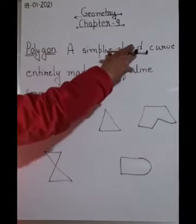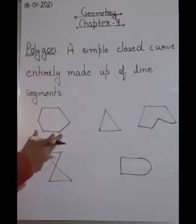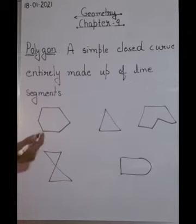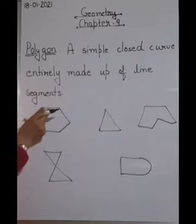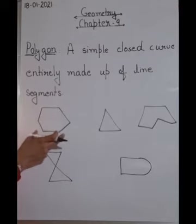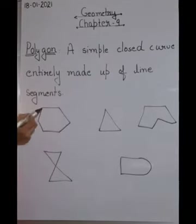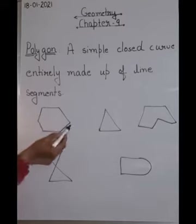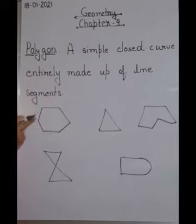A polygon is a simple closed curve entirely made up of line segments. This first figure is a simple and closed curve - it is closed because it has the same starting and ending point, and it is simple because no line of the curve is crossing or intersecting itself. It is also entirely made up of line segments - this is a line segment, this is also a line segment, this one too - they all are line segments.